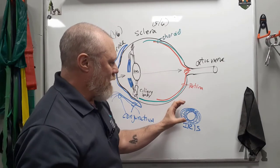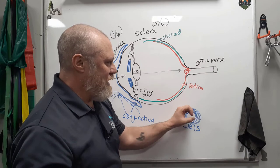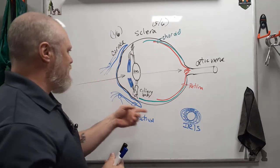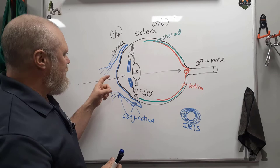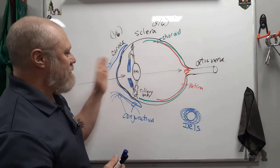And then the round muscles will constrict the pupil down when you're having more of a parasympathetic response. And that'll let more or less light in.